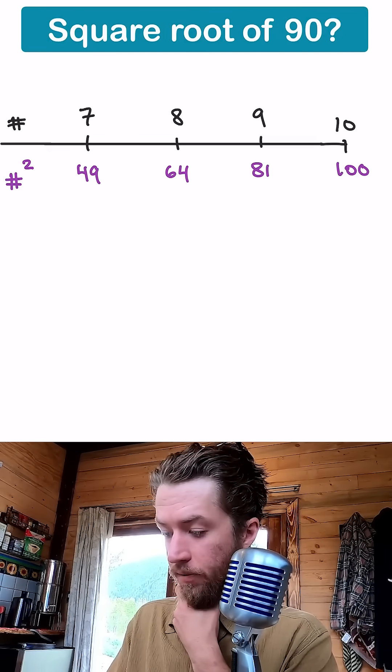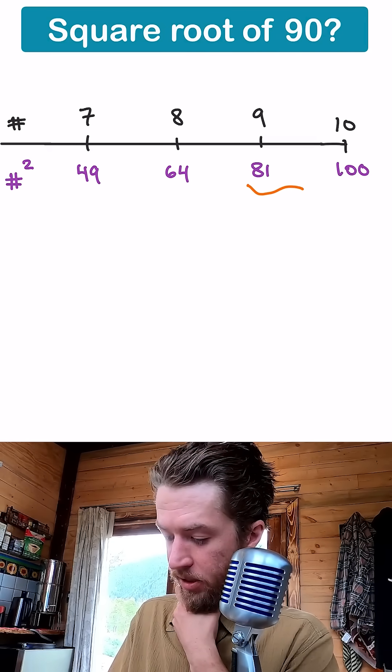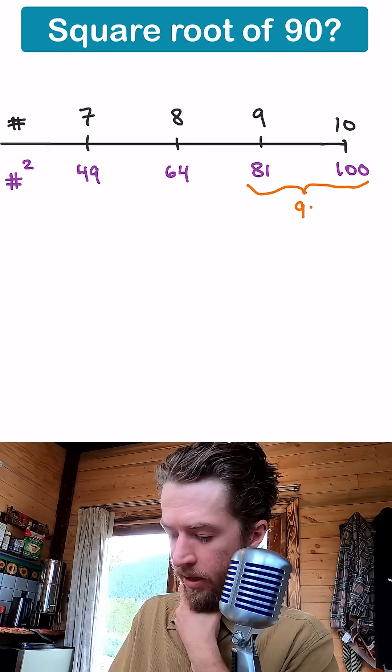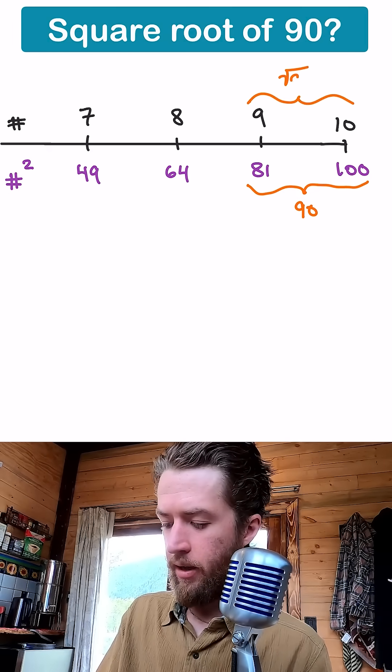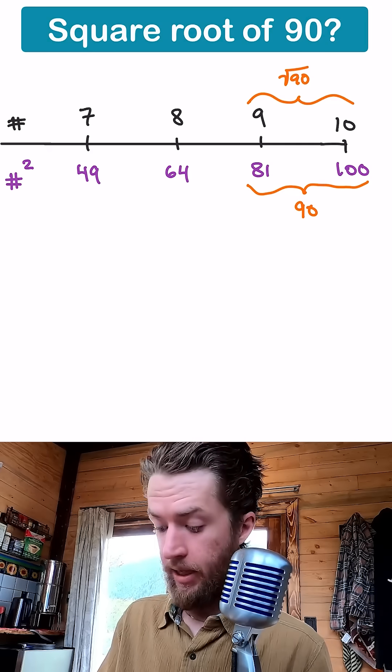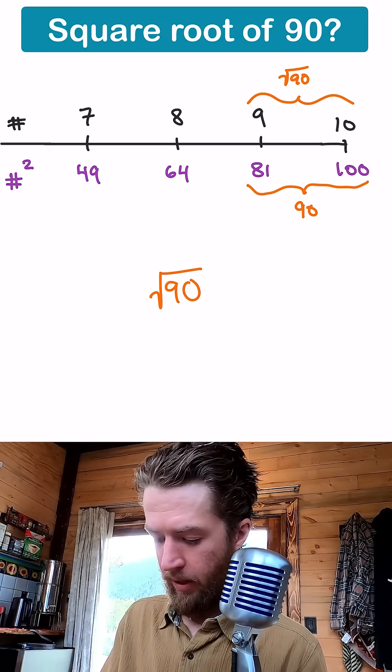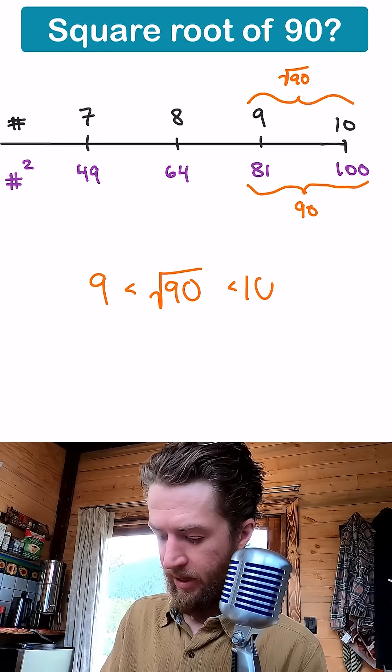So where is 90 in all of this? Well, 90 is kind of snugly hidden right in here. 90-ish. So that means the square root of 90 is going to be hiding between 9 and 10. Or in other terms, the square root of 90 is greater than 9, but it's less than 10.